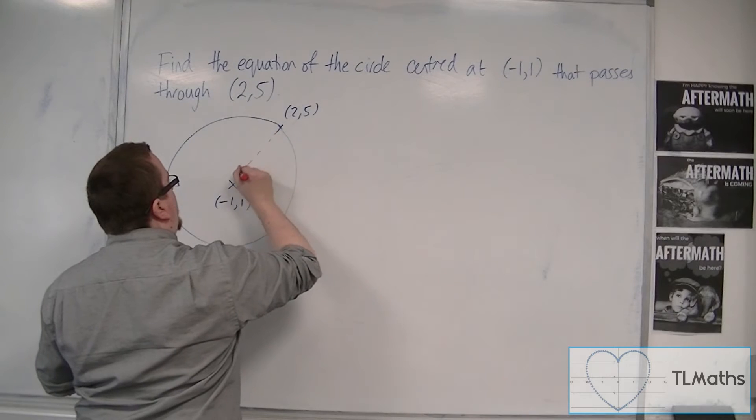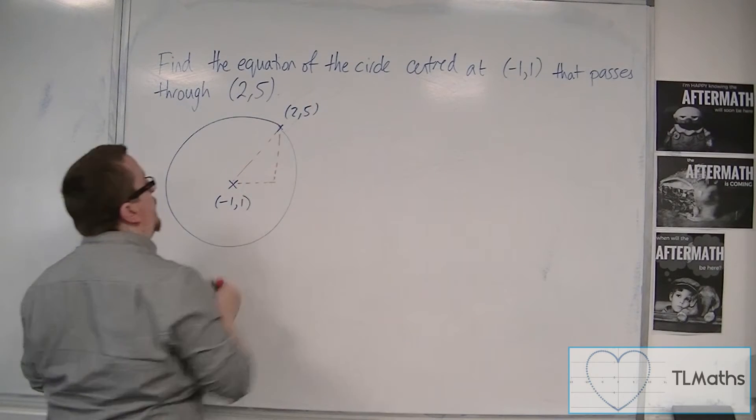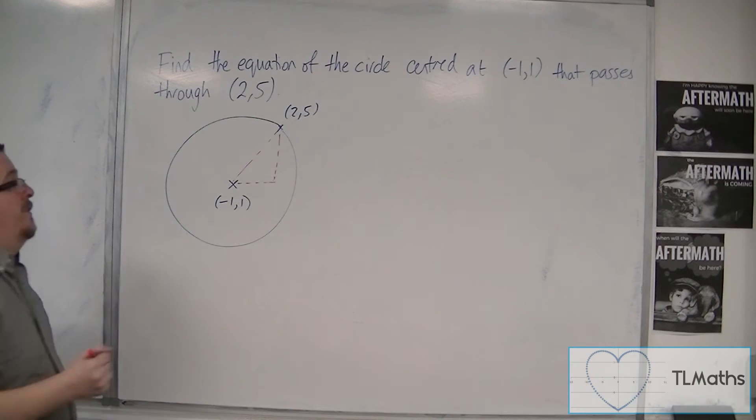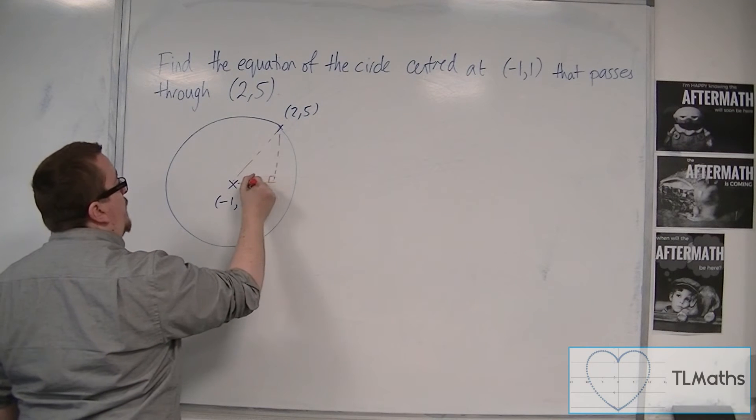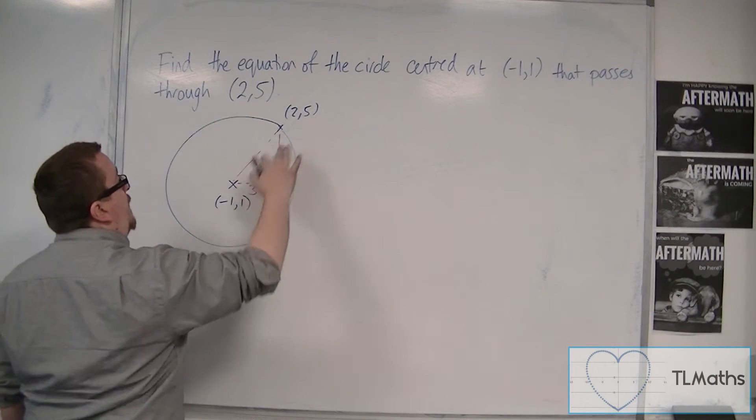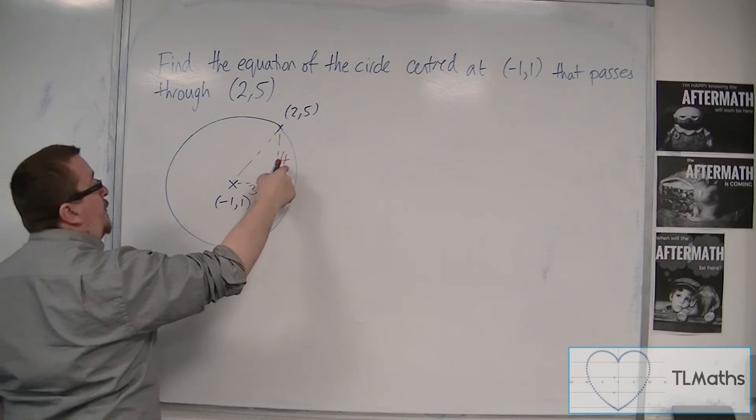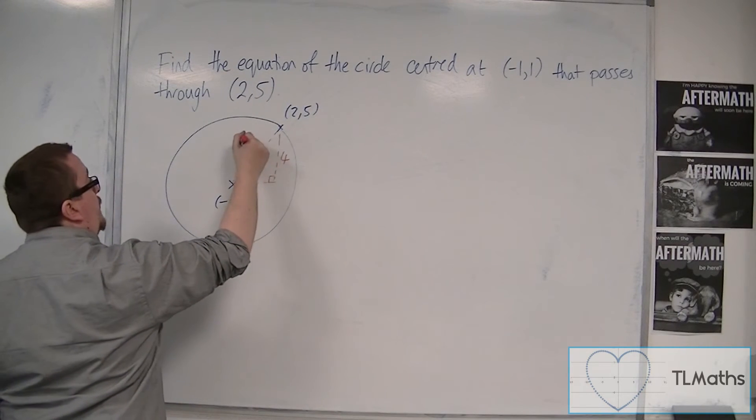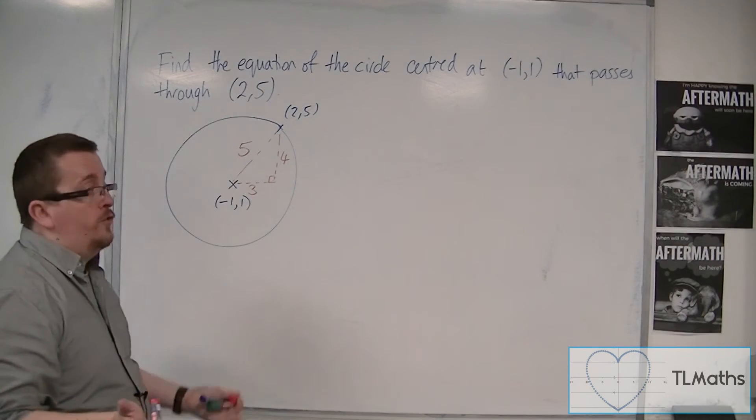Now, what we can do is work out the radius of the circle using Pythagoras. From -1 to 2, that's of length 3, and from 1 to 5, that's of length 4. And so 3 squared plus 4 squared is 25, the square root of 25 is 5. So the radius of the circle is 5, a 3-4-5 triangle.